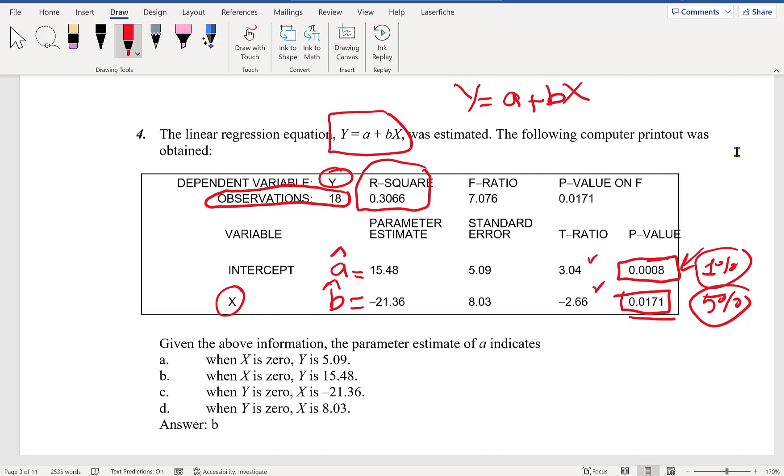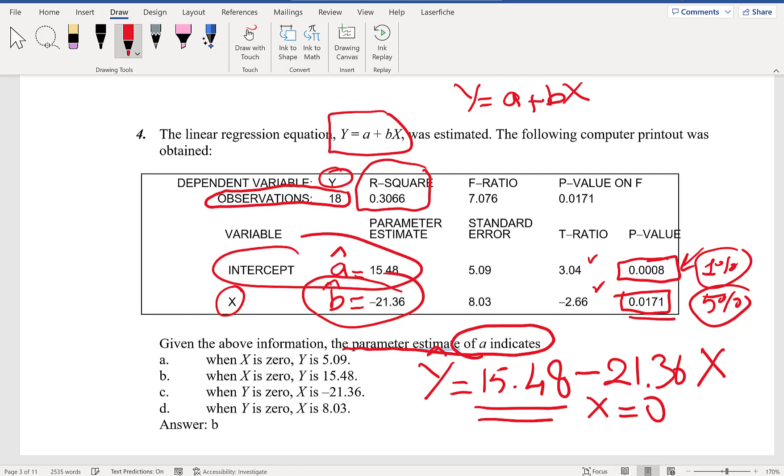Let's see what the question is asking. Given the above information, the parameter estimate of a indicates—when you write this down, Y-hat is going to be 15.48, and it's not actually plus because the coefficient estimate of beta-hat is negative, so minus 21.36X. This means if X is zero, the intercept estimate tells you Y is going to be equal to 15.48. The correct answer is B. That was easy.